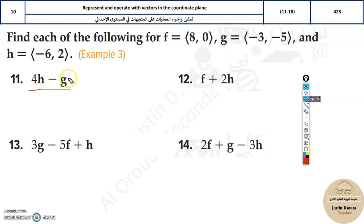That means four times the vector h. You basically have to multiply four over here, and then to this vector subtract the g vector. So it's very straightforward. Now let me just solve one in detail.